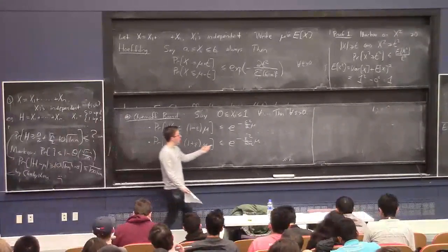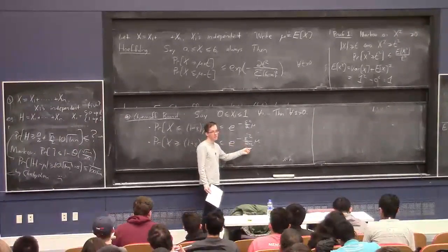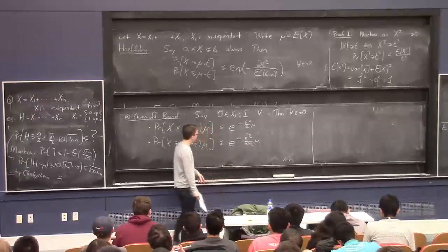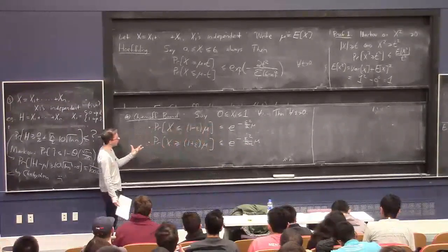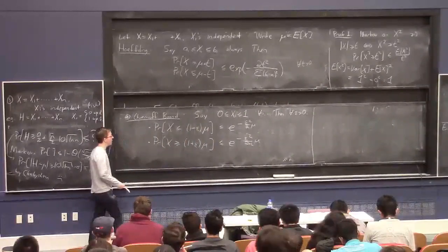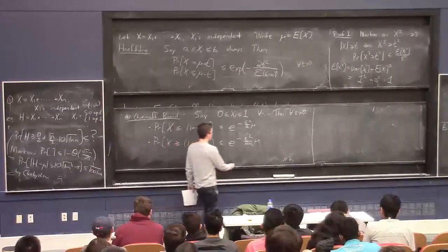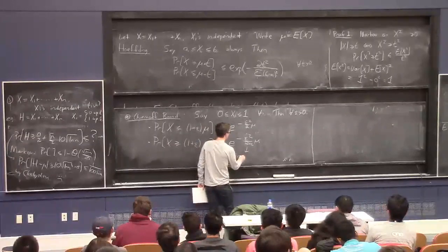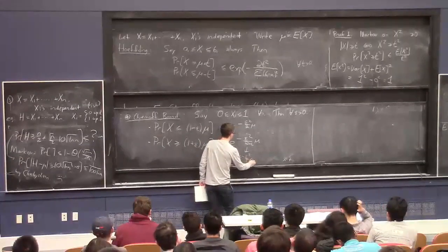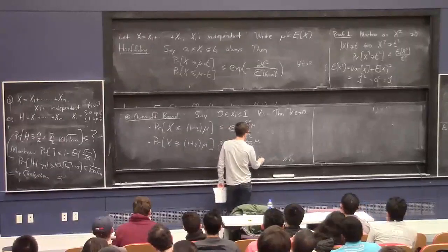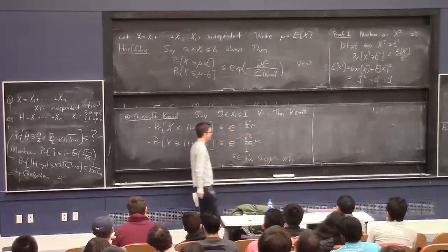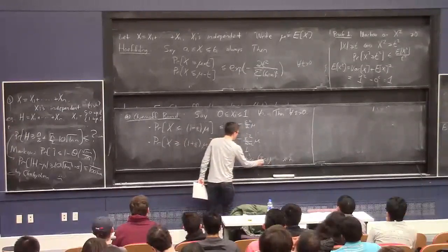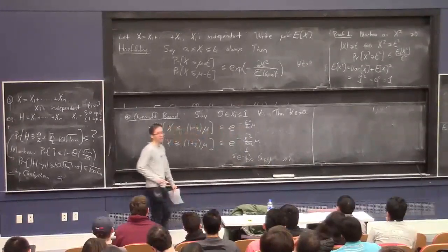Now, this is really kind of a bit splitting hairs because you usually use this when epsilon is a very small number, close to 0. So there's basically no difference between 2 and 2 plus epsilon. But if you really want to write a really strong but true statement, then you have to write this. But it's very common to just see people use that, like, oh, well, this is at most e to the minus epsilon squared over 3 mu, if epsilon is at most 1, which it almost always is. And you rarely care too much about this constant here.